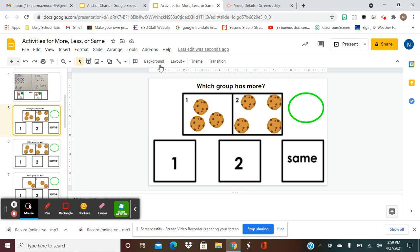So I'm going to read the question. It says which group has more? So we have to decide if group one has more, if group two has more, or if they have the same amount. This is, it says right here, same. Okay, so group one has one, two, and three. So group one has three, three cookies. And then group two has one, two, three, and four. So this one has three and this one has four. Which one has more?